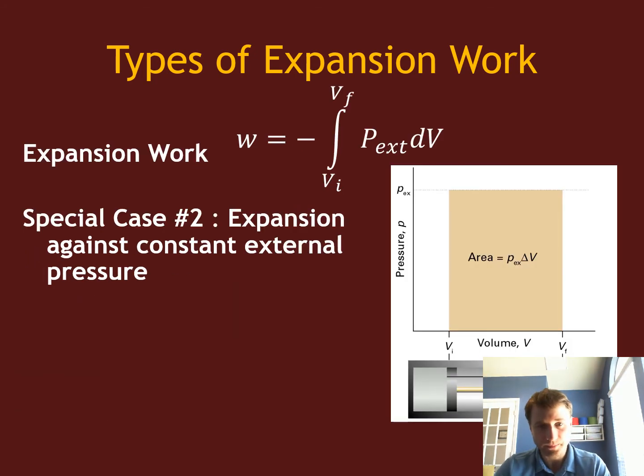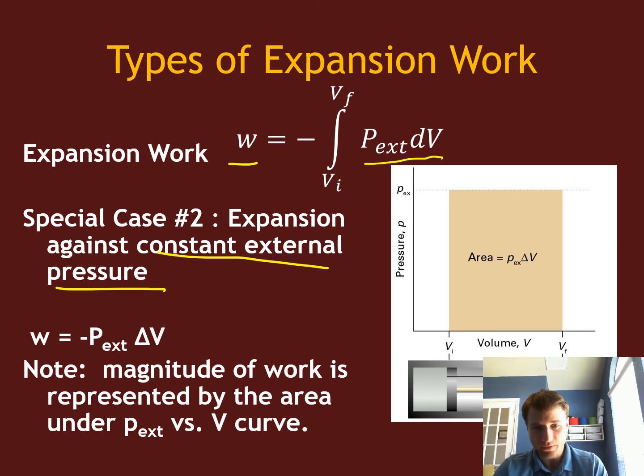Now if we want to look at the expansion against a constant external pressure, we have this integral. This work is minus p_ext dV. Well, the external pressure is just a constant so that can get pulled out of the integrand, and you are left with the work that's being done is just minus p_ext delta V.